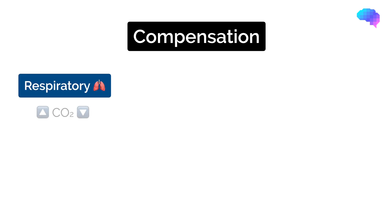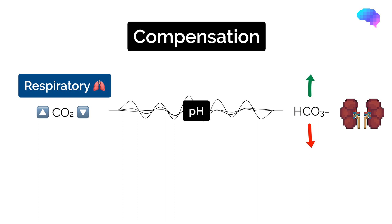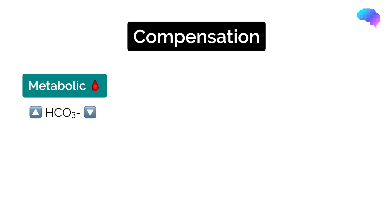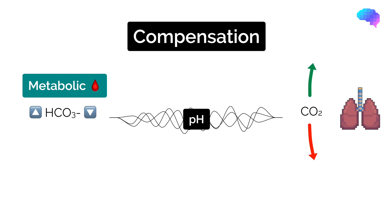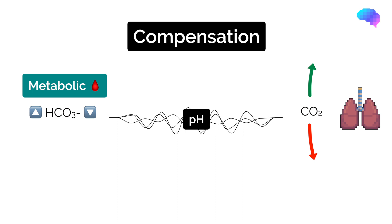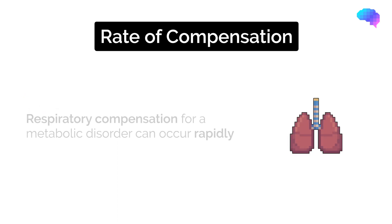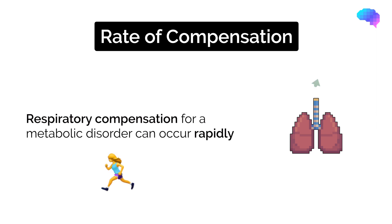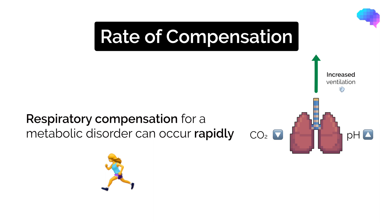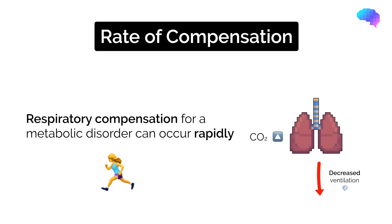Compensation has been touched on already in the earlier sections. Respiratory acidosis or alkalosis — that is, changes in the CO2 — can be metabolically compensated by increasing or decreasing the levels of HCO3 in an attempt to move the pH closer to the normal range. Metabolic acidosis or alkalosis — that is, changes in the HCO3 — can be compensated by the respiratory system retaining or blowing off CO2. Respiratory compensation for a metabolic disorder can occur quickly by either increasing or decreasing alveolar ventilation to blow off more CO2 in order to raise the pH, or retain more CO2 in order to lower the pH.